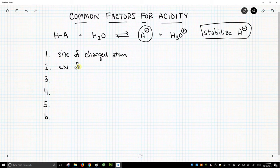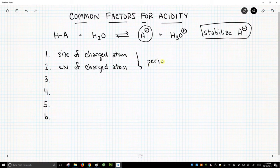Another factor, the electronegativity of the charged atom. More electronegative atoms handle negative charges more readily. So these are both examples of periodic trends, periodic table trends.